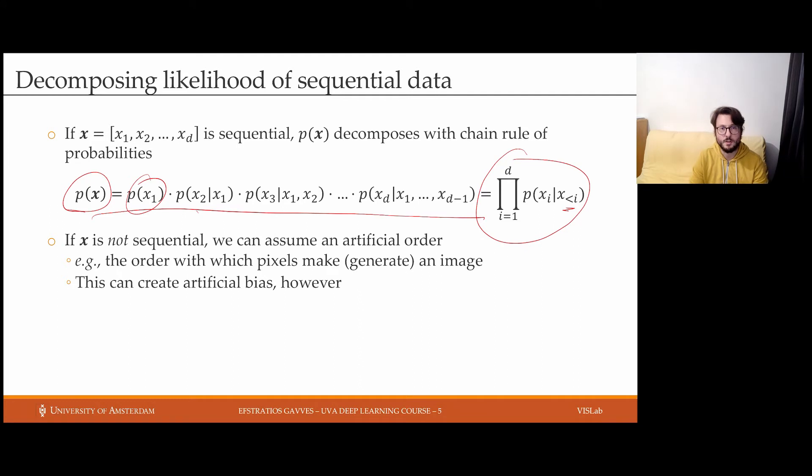If x is not sequential, however we want to use autoregressive models, it is possible to impose an order. That is also possible when the order is not obvious to us. For instance, it is possible to say that in images I'm going to generate pixels from top left to the bottom right by moving row-wise. Will this always be correct or reasonable? Perhaps it might give good results, but it also might cause artificial bias. In any case, we have to be aware of the risks.